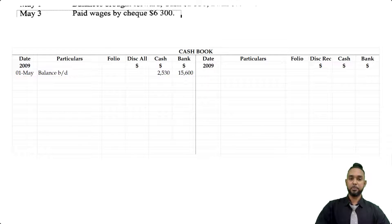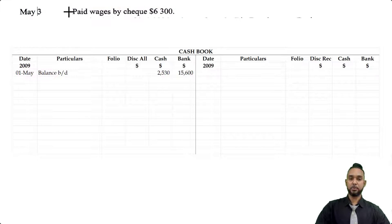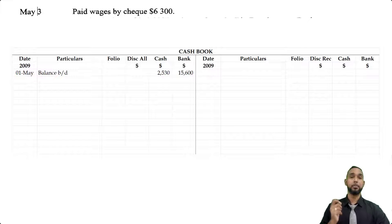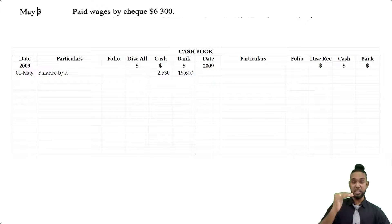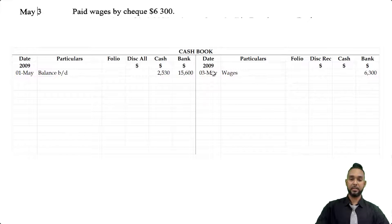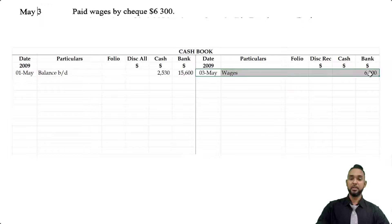The next item says that we paid wages by check, $6,300. A payment will require money to come out of our bank account, because we are paying with a check. When money comes out of our account, it means the bank account is going down. Because bank is an asset and we have to record a decrease in an asset, it will go on the credit side. So you're seeing on the credit side of the cash book under the bank column, $6,300.